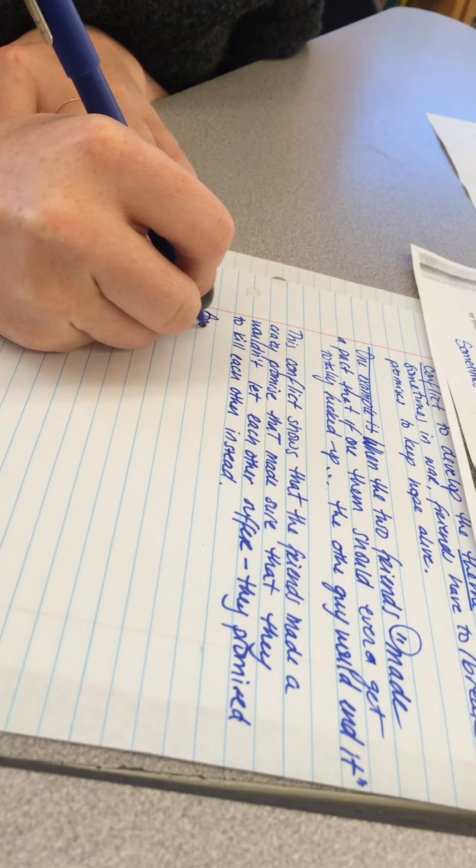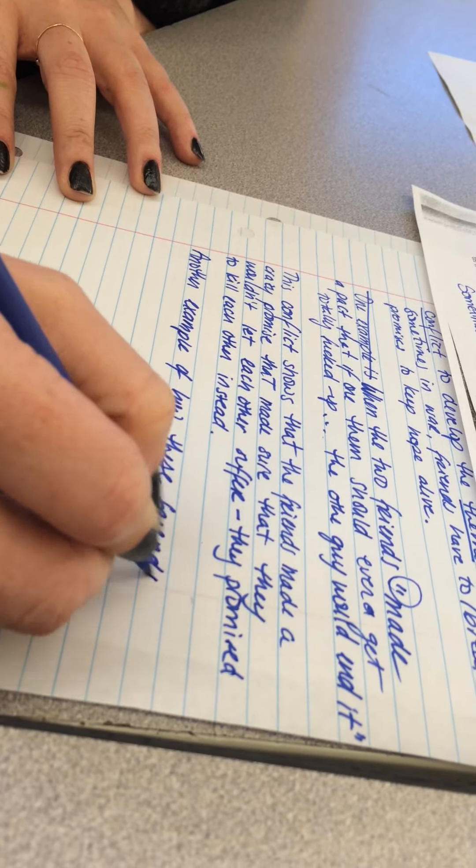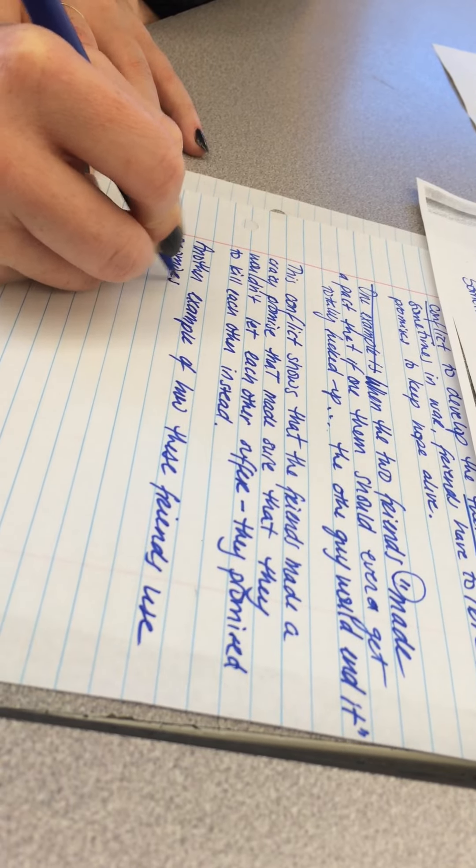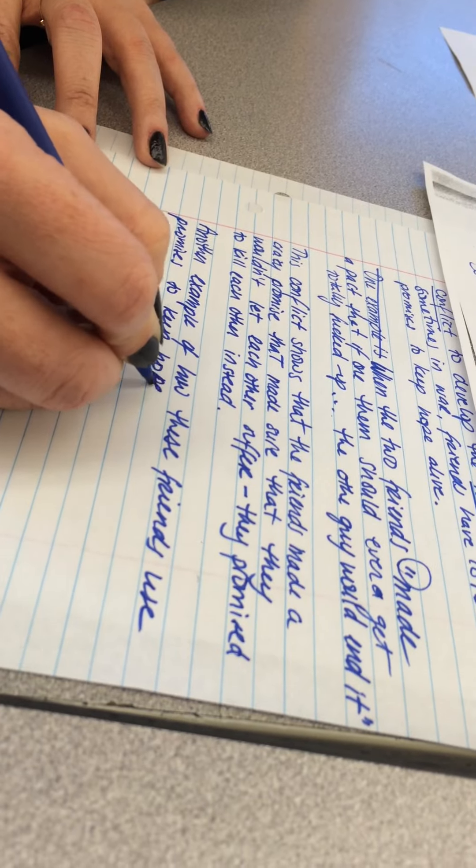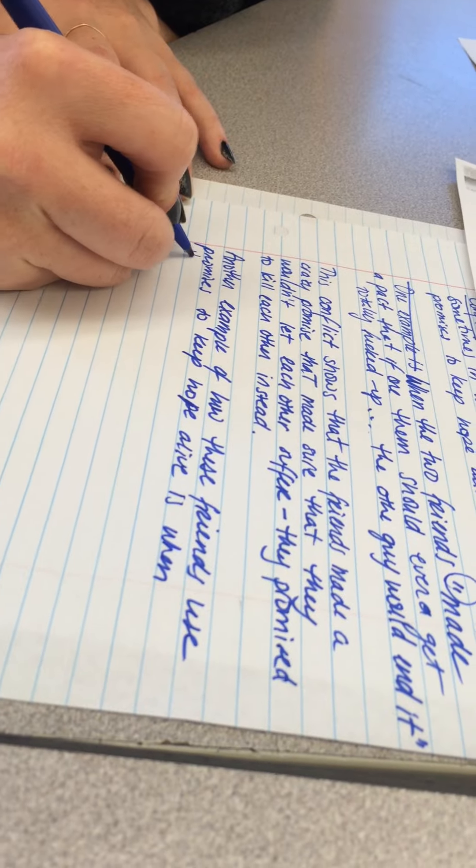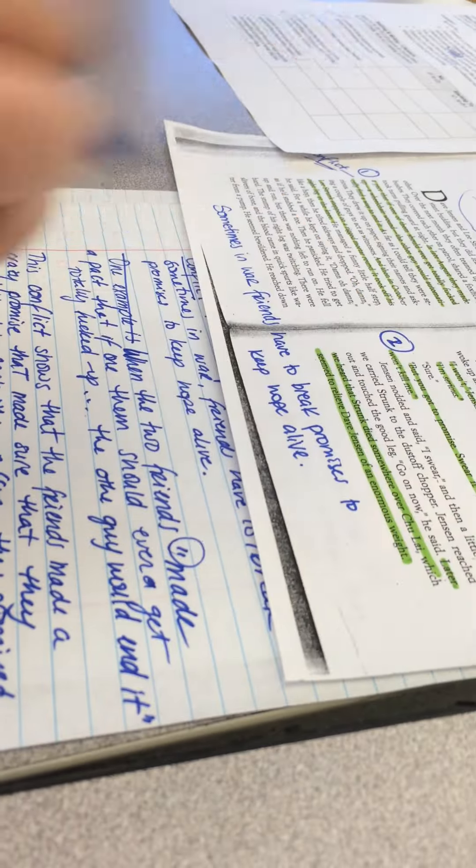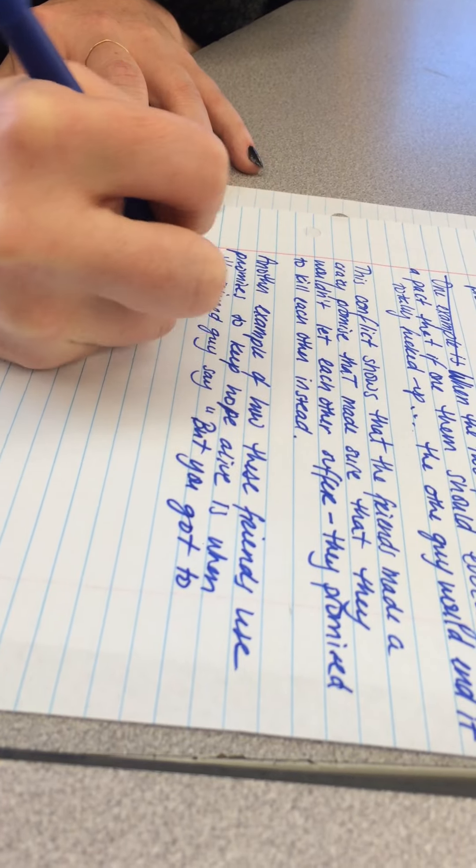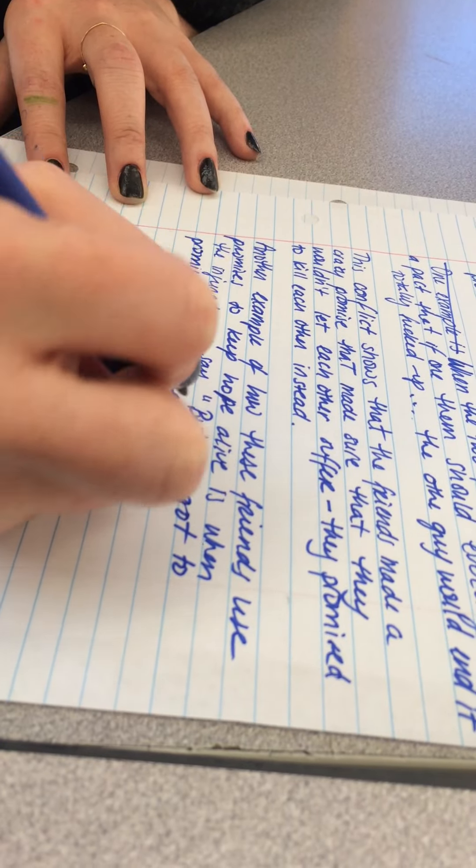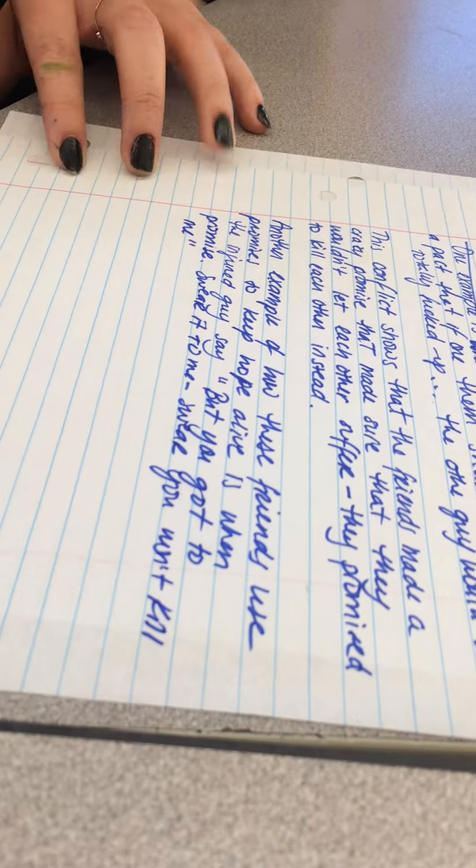So I have my quote, I have my explanation, so now I have to do one more. Another example of how these friends use promises to keep hope alive is when the injured guy says, quote, but you got to promise. Swear it to me. Swear you won't kill me. Okay, so I have my quote.